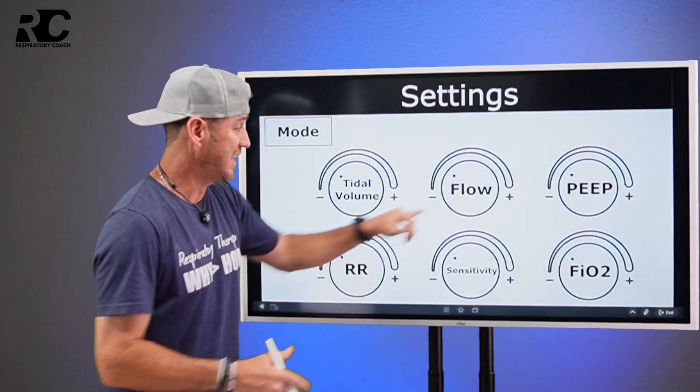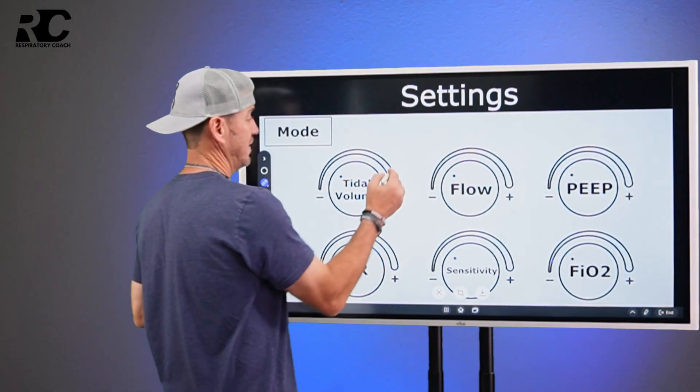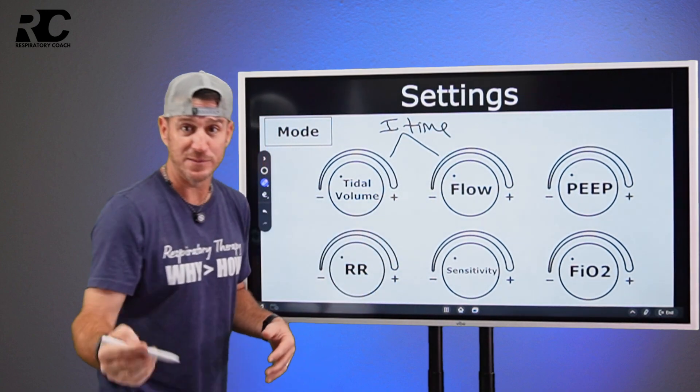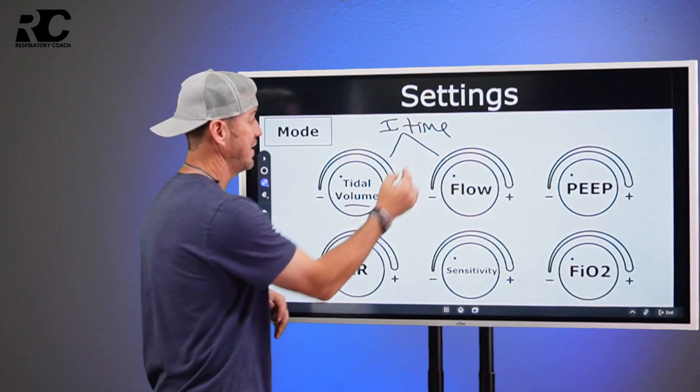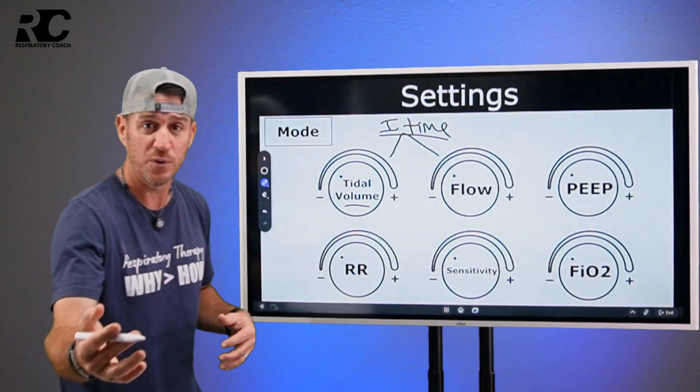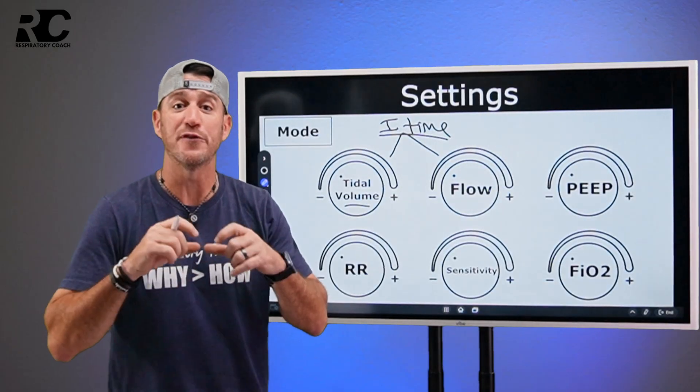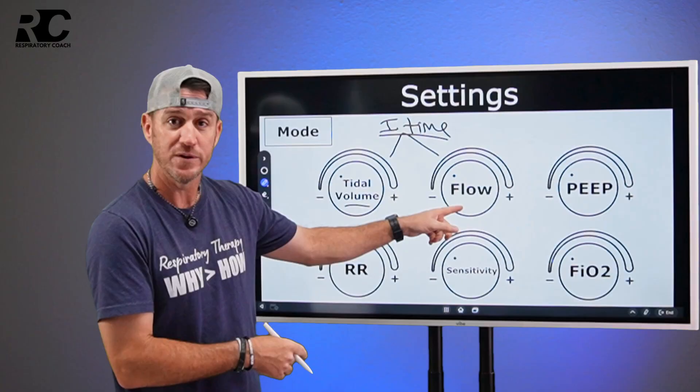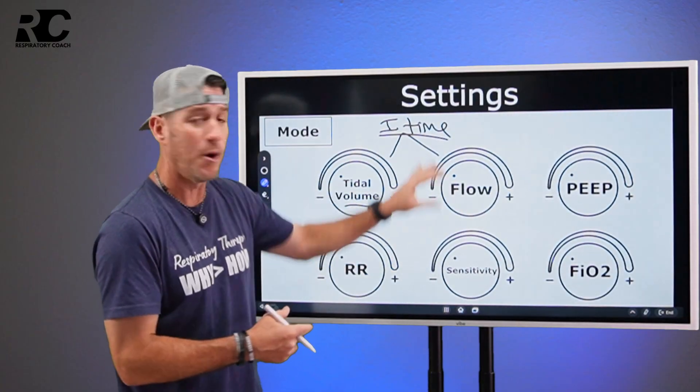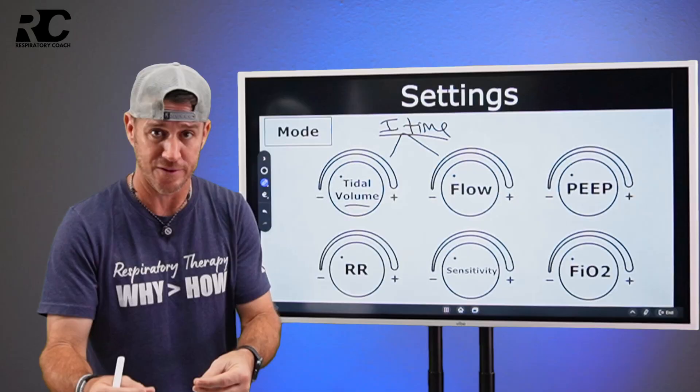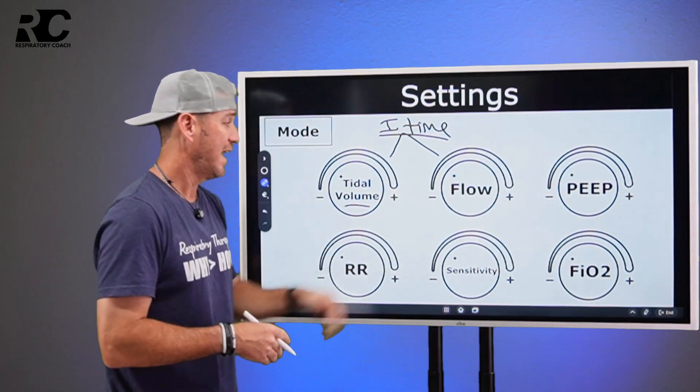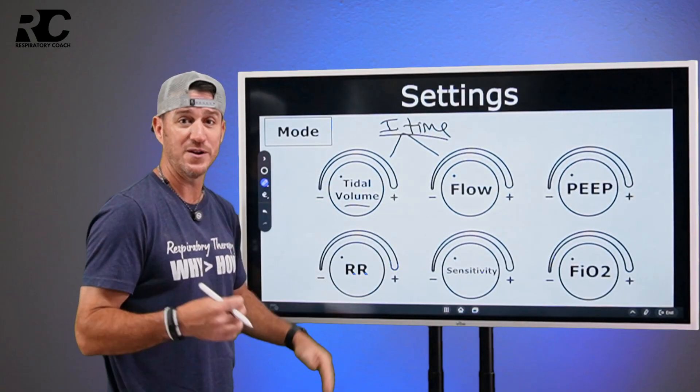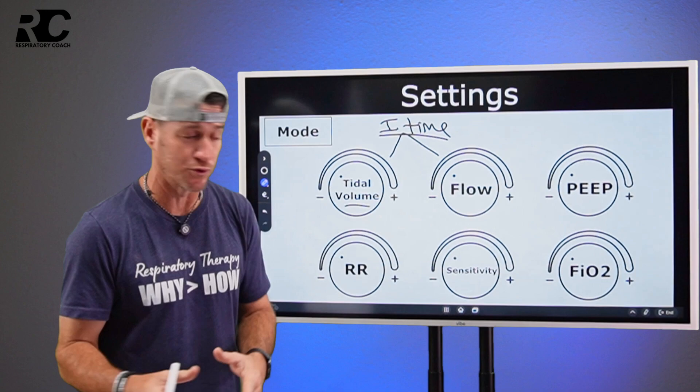...either way, these two right here are going to yield your eye time. So if you're saying, well, I set a volume and an eye time, then guess what? When you set that eye time, you're telling it how fast to deliver the volume you're controlling flow. So you have to realize that these three all play the game together. Okay. How fast to deliver that volume and respiratory rate determines how often. That's for volume control. Now let's look at the next one.